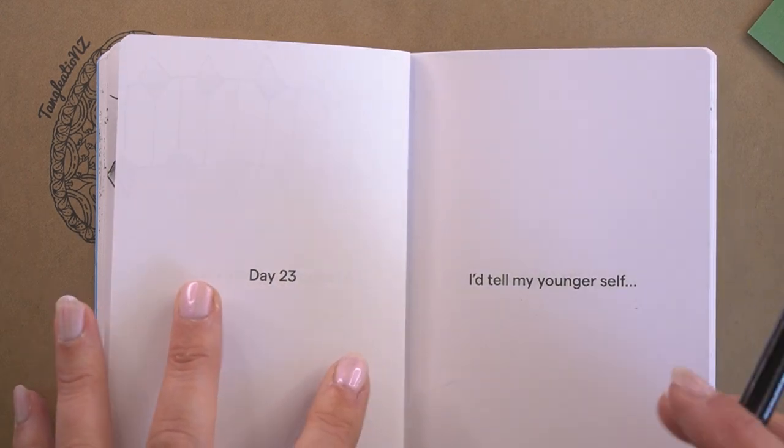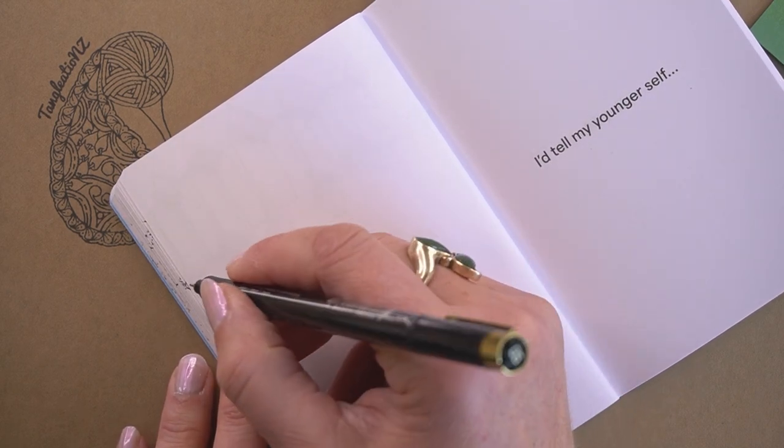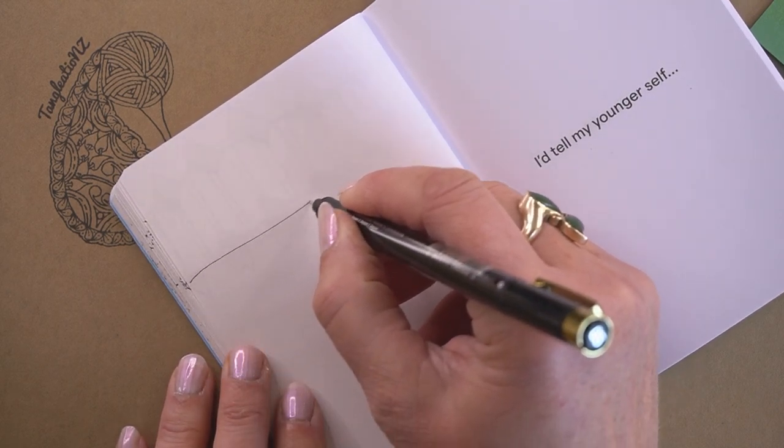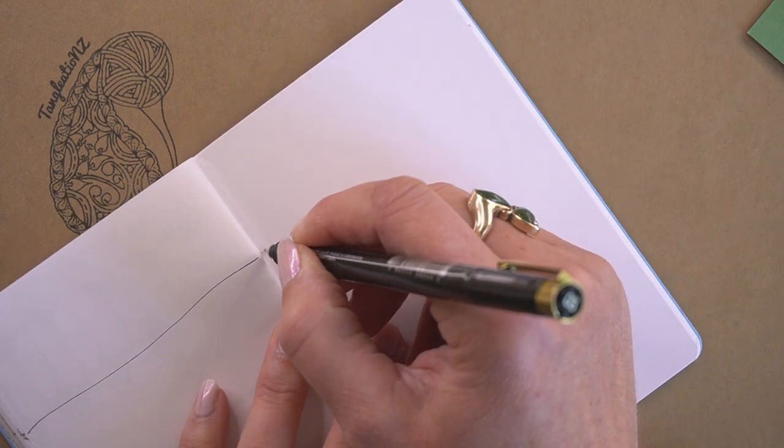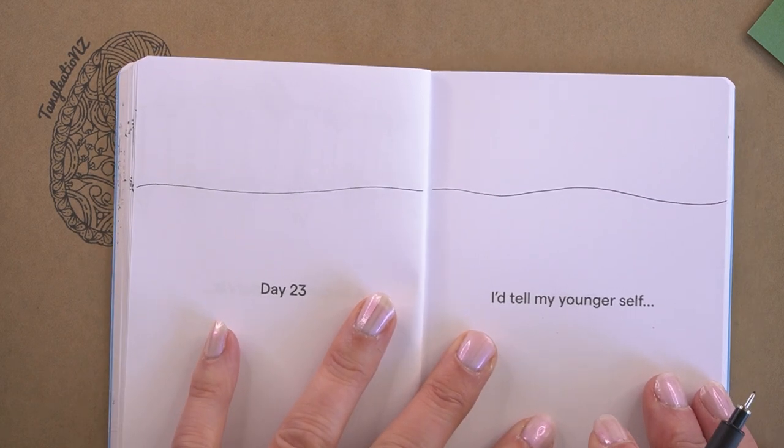First of all I want to use a line to mount our tangle on, so just across my page I'm just going to draw a line, a straight line or a wiggly line, it doesn't matter, across our spread today.